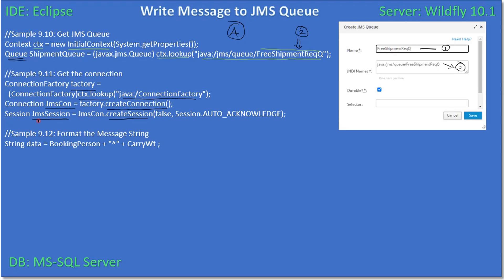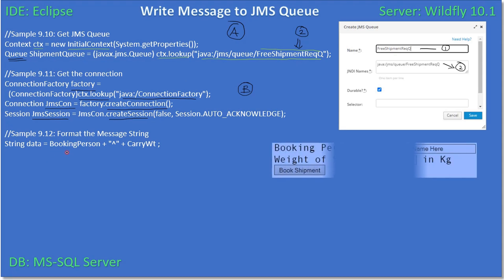Now we have the JMS Queue object ready — this is the queue object from JMS. We also have a connection and session ready. Using the form field data, here you can see the booking person name. When we go to the code implementation we will show more code to get the form field information, since we have done that many times before.